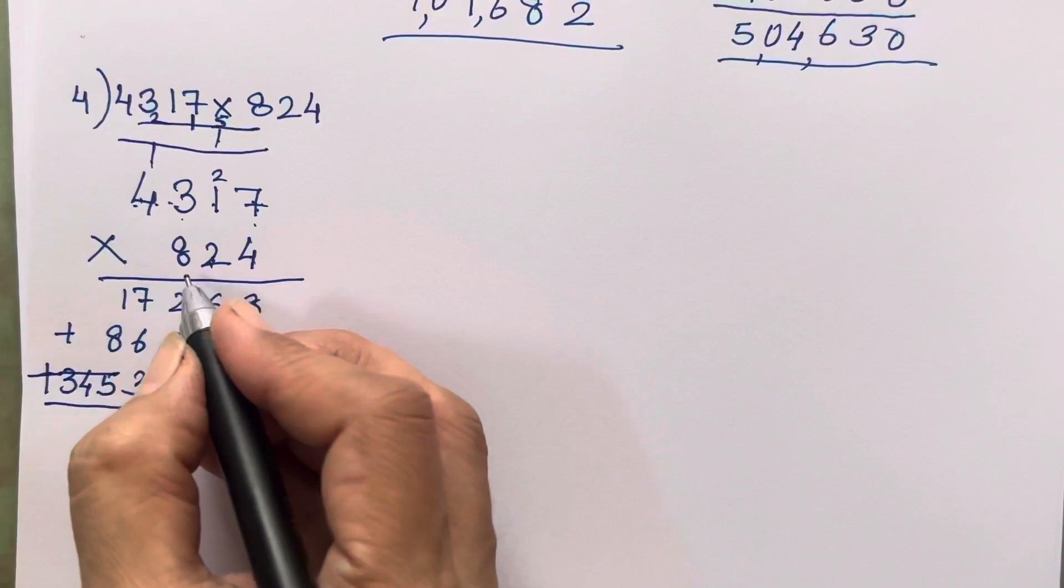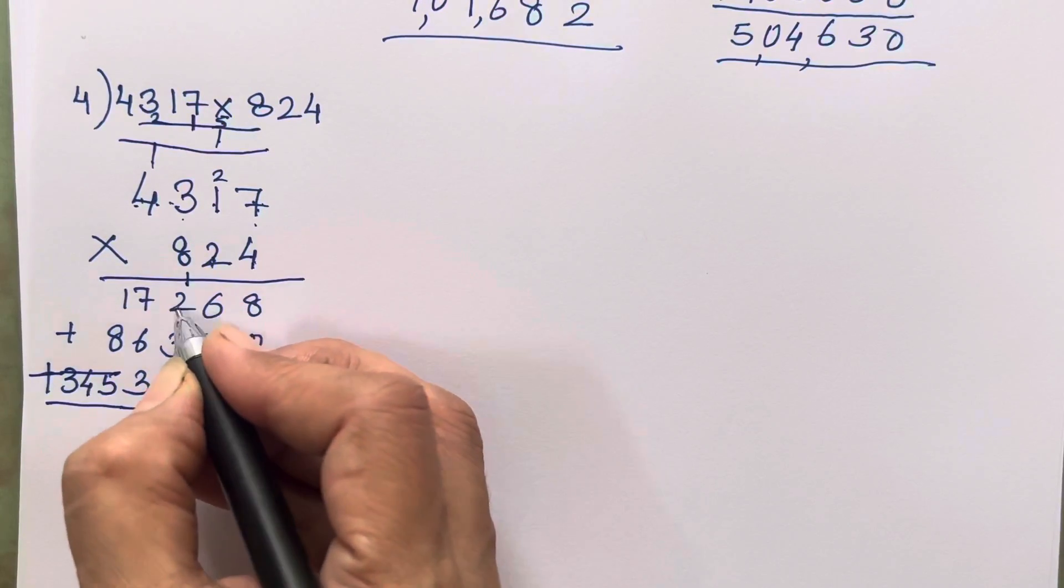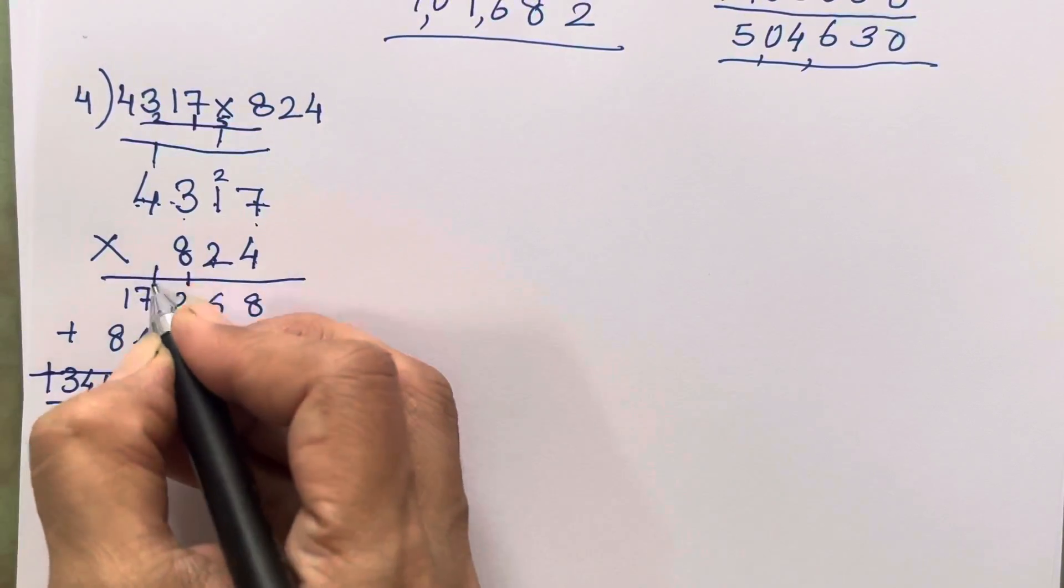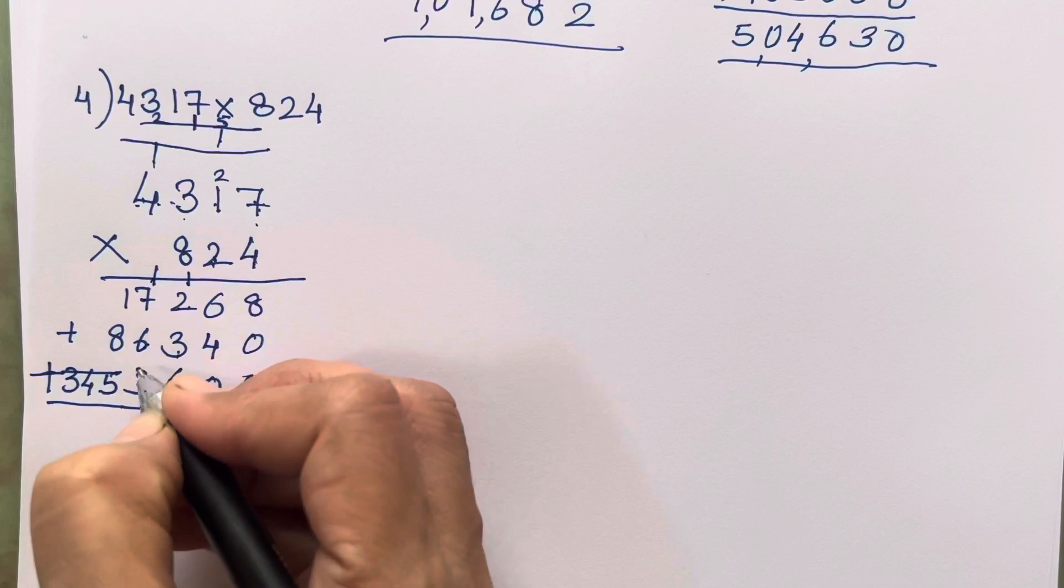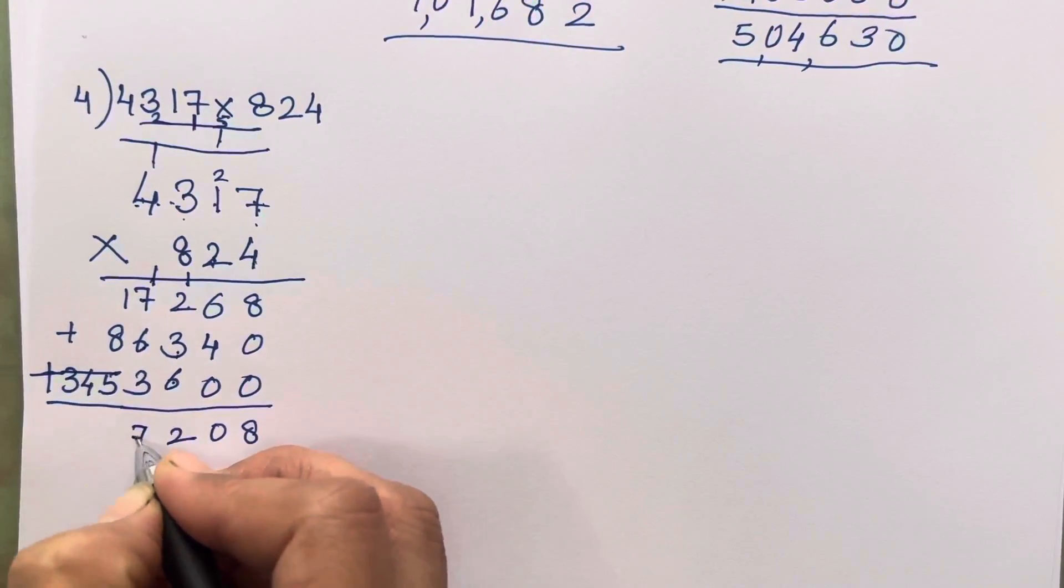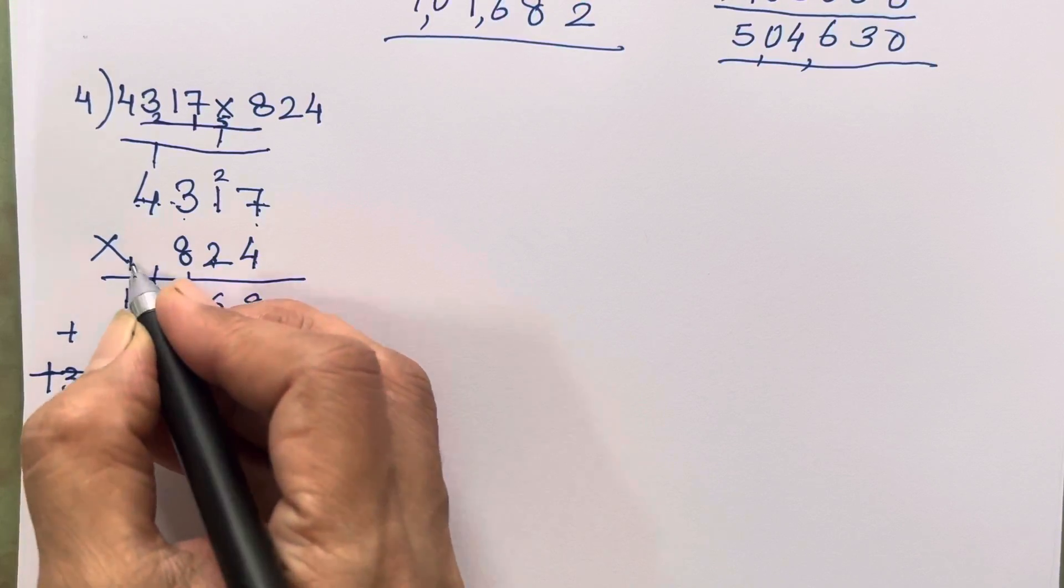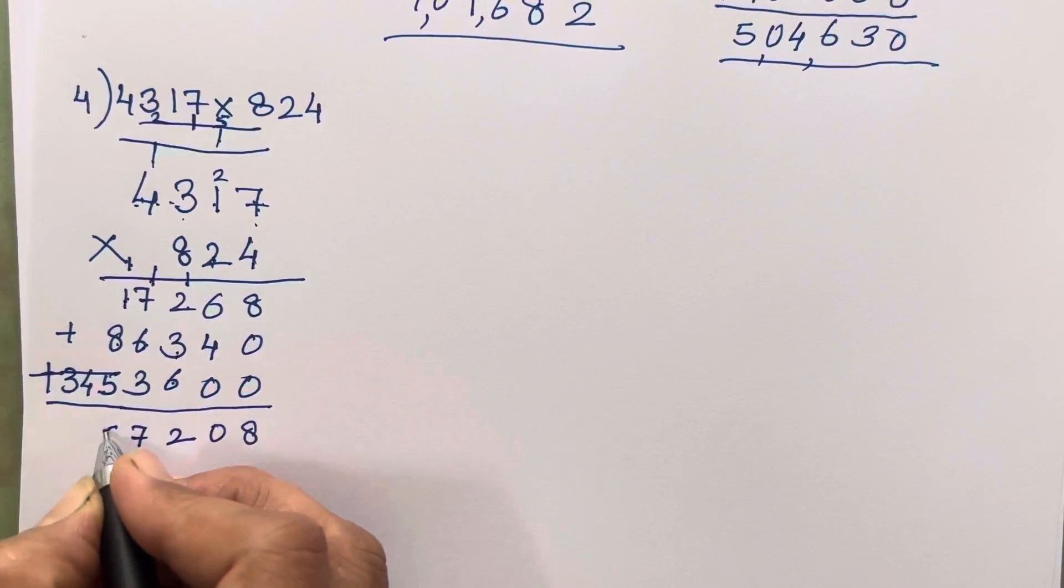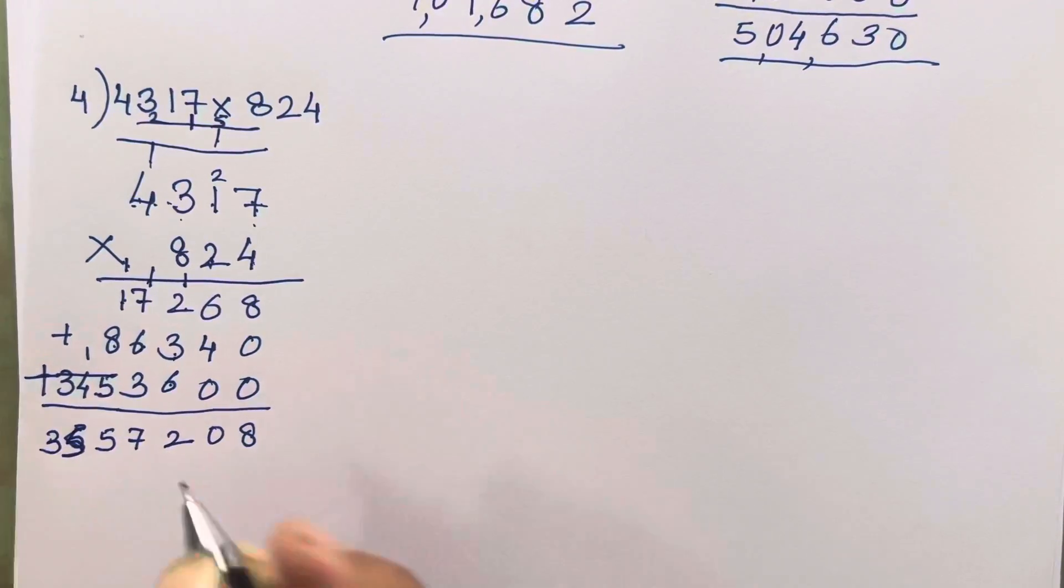So 8 threes are 24 plus 1, 25. So 4 eights are 32 plus 2, 34. So 8, 10, 6 plus 3, 9, 9, 10, 11, 12. 7, 6 plus 1, 7, 7 and 7, 14, 15, 16, 17. 8 plus 1, 9, 9 plus 1, 10, 10 plus 5, 15. 1 plus 4, 5 and 3 as it is. So this is your answer.